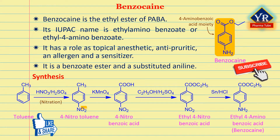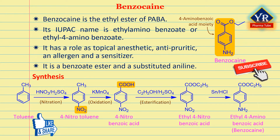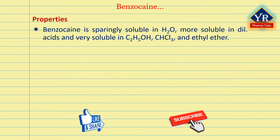Benzocaine is prepared from toluene. Toluene is initially nitrated with nitric acid in sulfuric acid solution to form para-nitrotoluene. This is then oxidized using potassium permanganate, converting the methyl group of 4-nitrotoluene to a carboxylic acid to give 4-nitrobenzoic acid. This oxidized compound is esterified by heating with ethanol and a few drops of sulfuric acid to yield ethyl 4-nitrobenzoate, which is finally reduced with tin and hydrochloric acid to yield benzocaine.